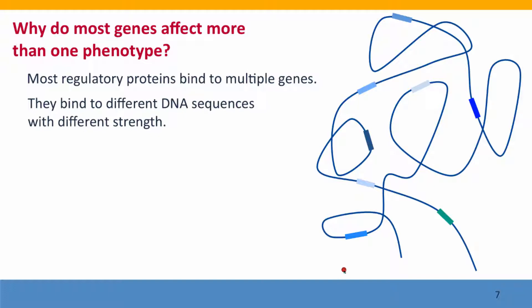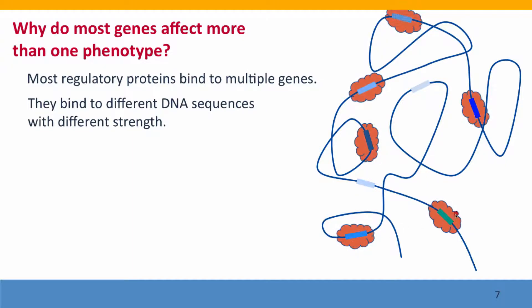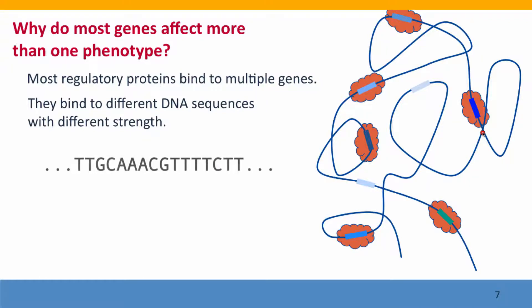They bind to these different places in the genome with different strengths. If the colors here indicate variant sequences, we'll see that some of these sequences have the regulatory protein bound to them — this is just one regulatory protein — and some of them don't. A way to think about this is to consider the diversity of sequences that a regulatory protein will bind to.